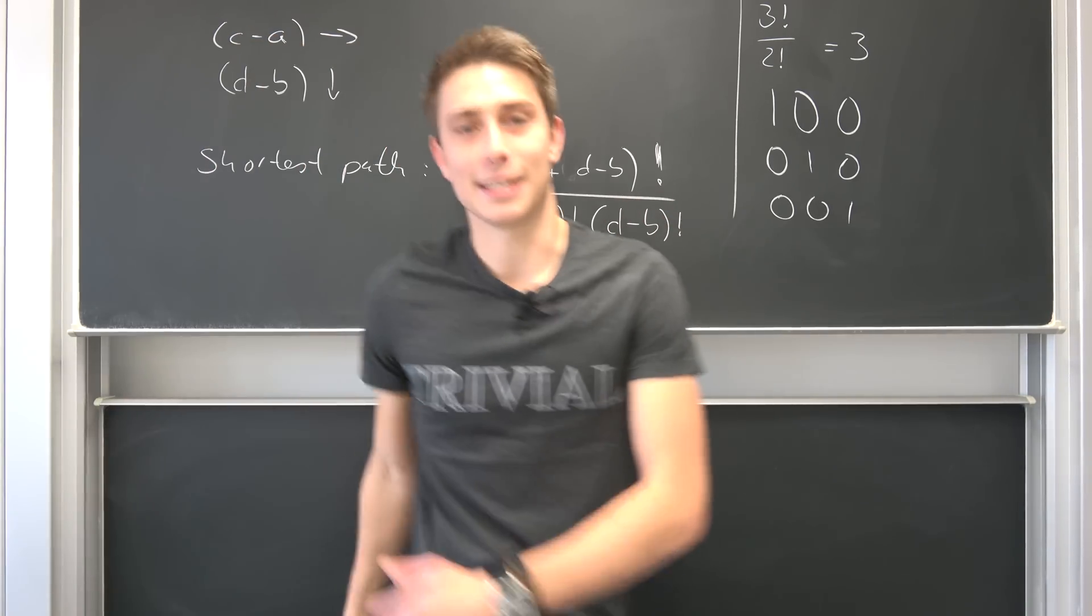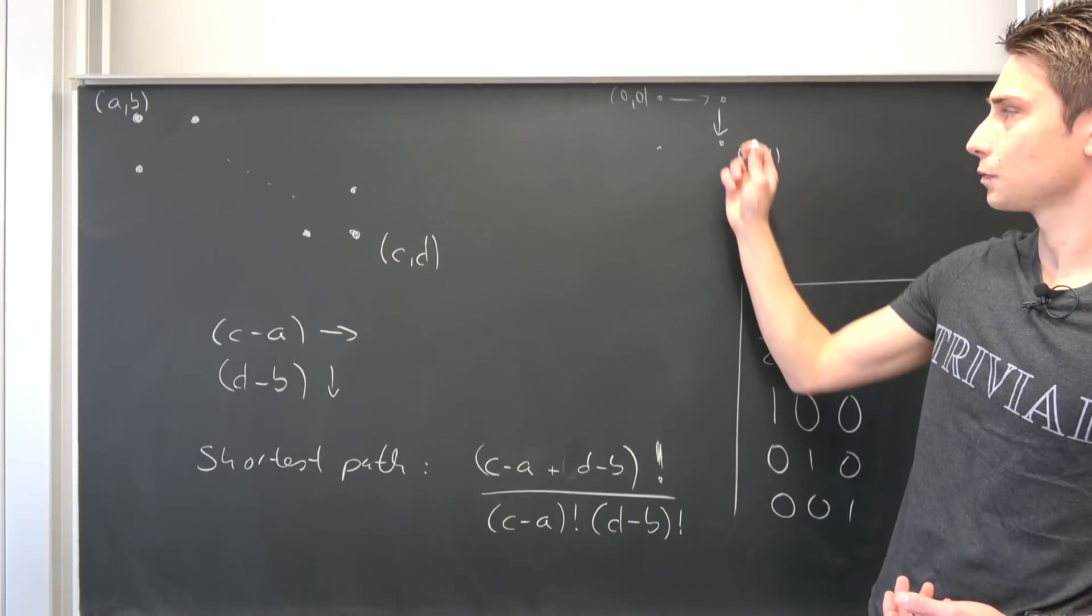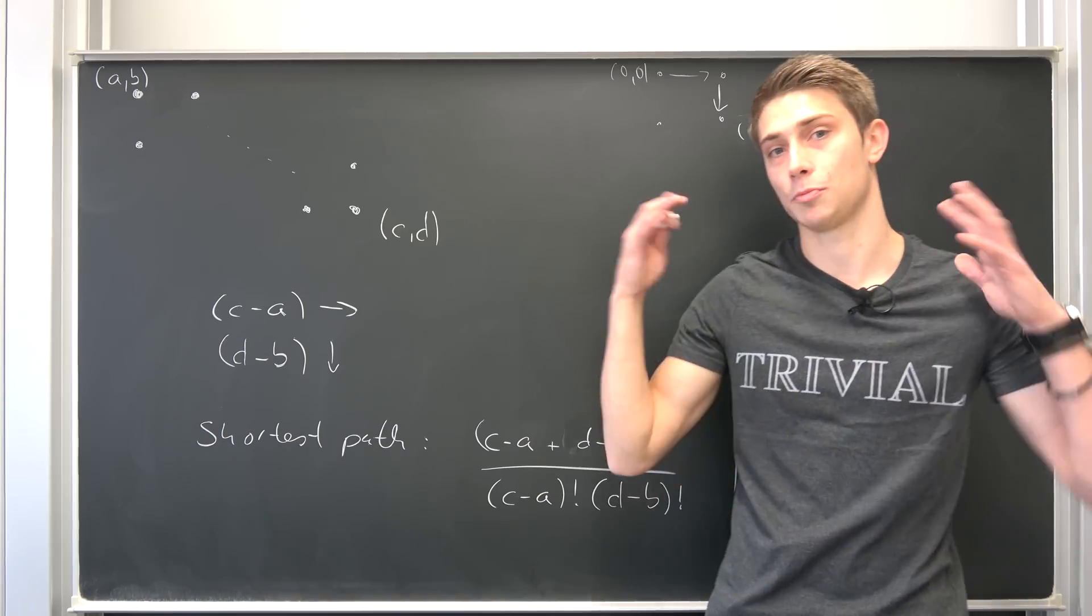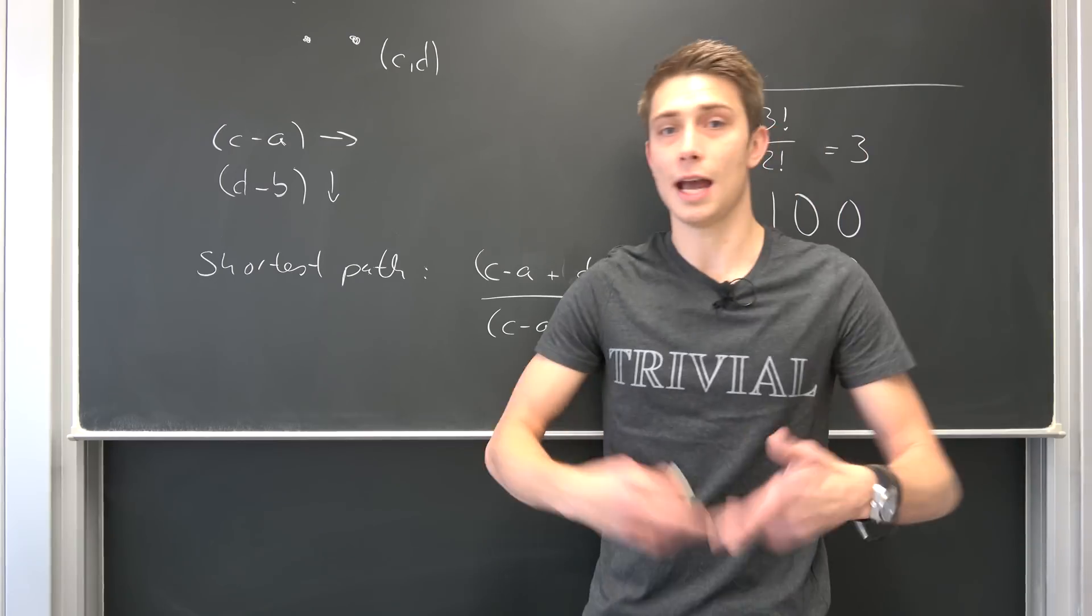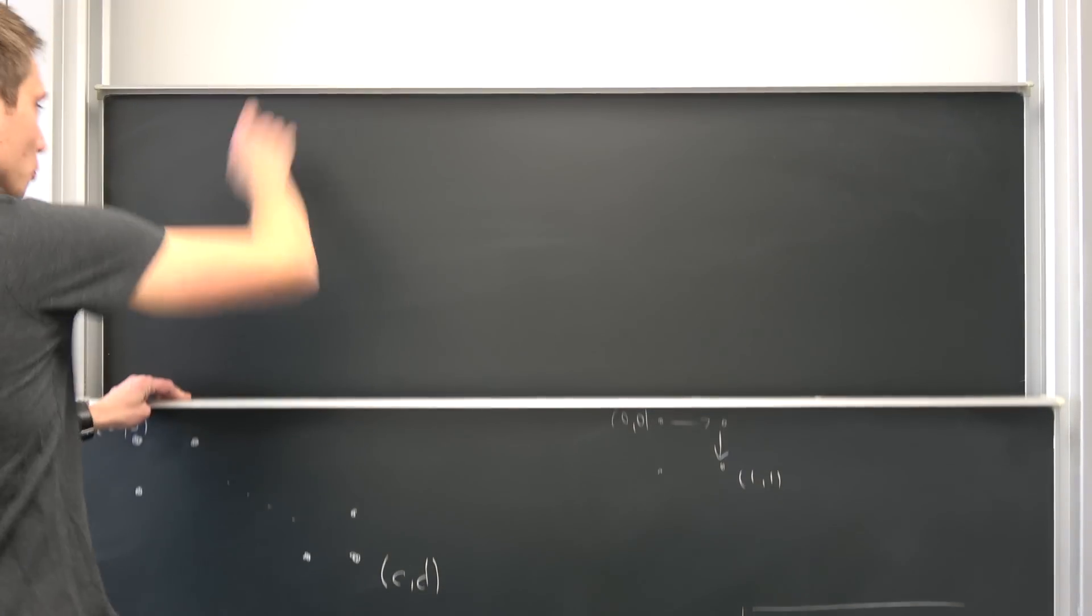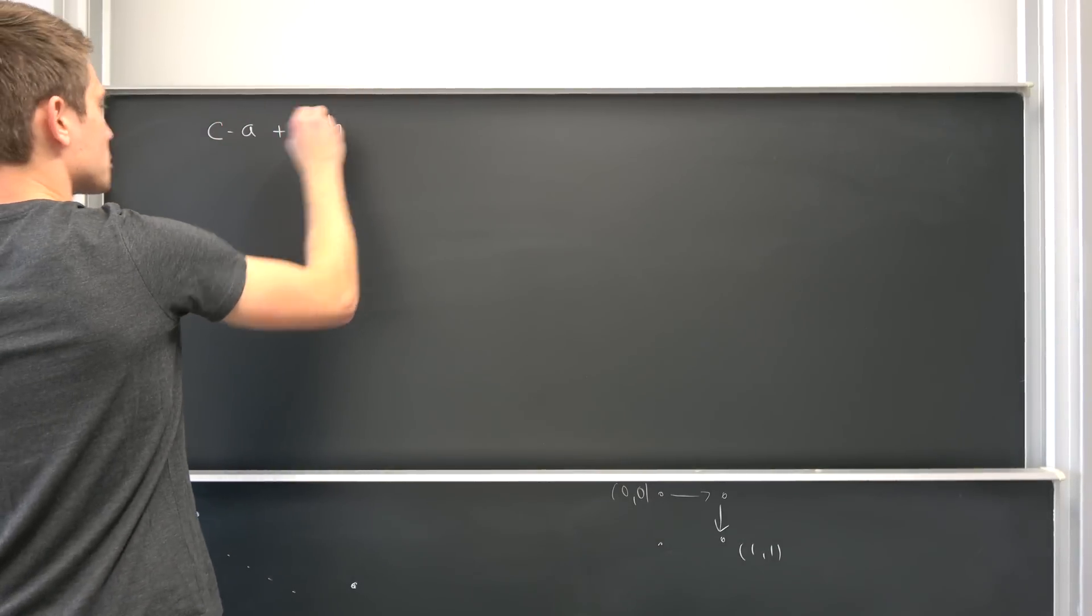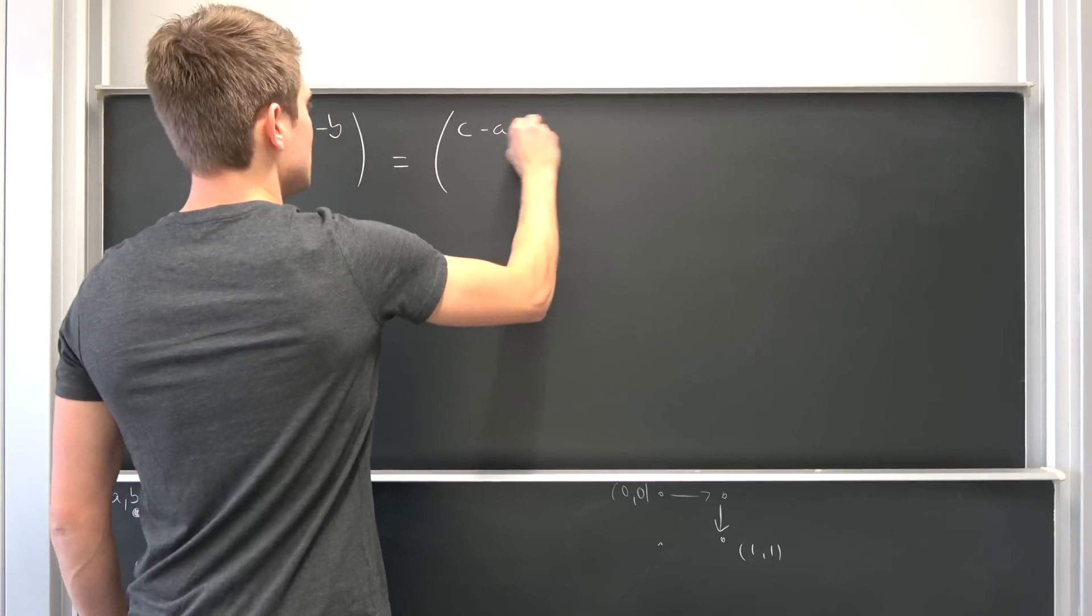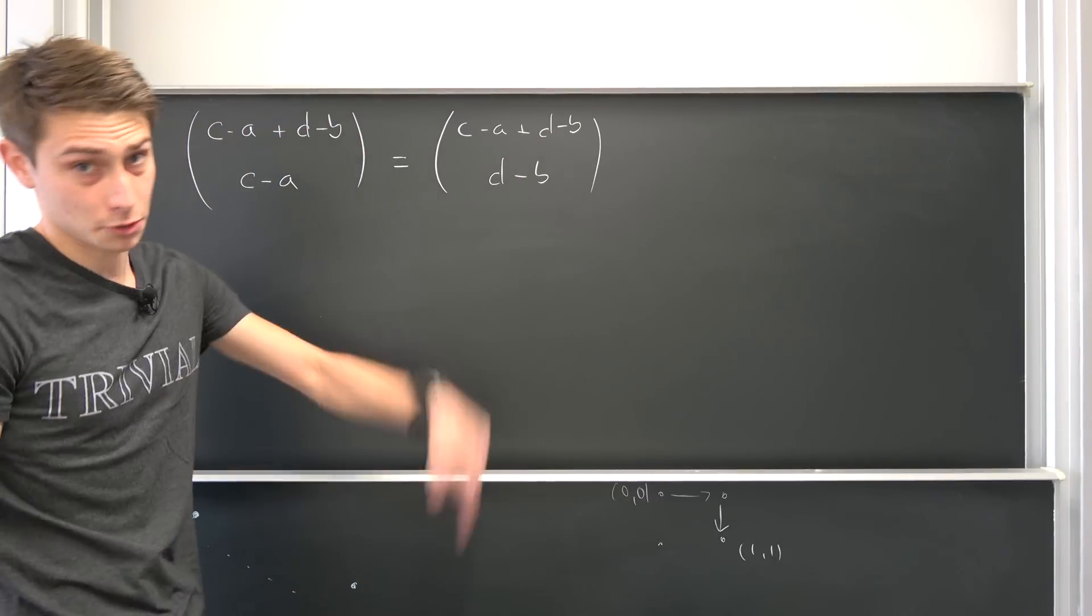And then we are already done. This is the amount of shortest paths and you can try it out for yourself. So if you plug in 1 and 0, you are going to end up with 2 in the end. So you have two shortest paths. You can expand this to bigger graphs. And there's also another way to write this right here using the n over k notation, the binomial coefficient. You are basically going to end up with this term being equal to (c minus a plus d minus b) over (c minus a), being equal to (c minus a plus d minus b) over (d minus b). So those two are equal to this expression down here.